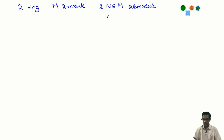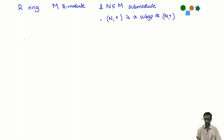A submodule in particular means that it is a subgroup of the additive group, a subgroup of M+. And so we can define the quotient group. Recall if I have a group and I have a normal subgroup, I can talk about the quotient.